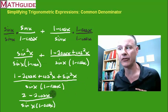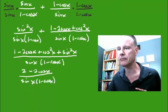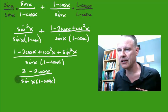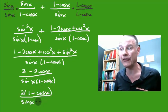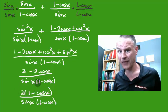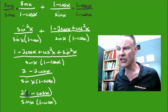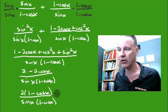Let me scroll down to give myself a little more room. The two terms in the numerator have a factor of 2 in common, so I factor out the 2 to get 2·(1 minus cosine(x)). Now I can see that the numerator has a common factor with the denominator: the (1 minus cosine) in the numerator and (1 minus cosine) in the denominator cancel each other. We're left with 2 over sine(x).